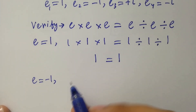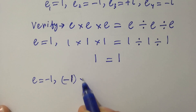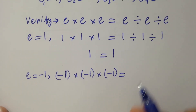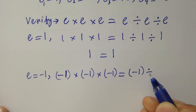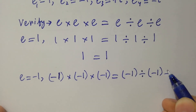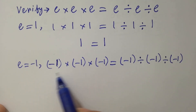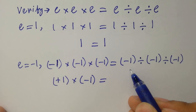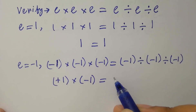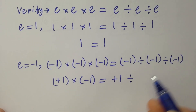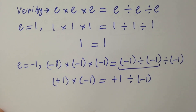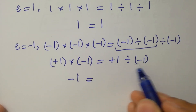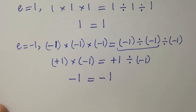Next, take e equals minus 1. Substituting: minus 1 times minus 1 times minus 1 equals minus 1 divided by minus 1 divided by minus 1. On the left, minus 1 times minus 1 is plus 1, times minus 1 gives minus 1. On the right, minus 1 divided by minus 1 is plus 1, divided by minus 1 gives minus 1. Left hand side equals right hand side. ✓